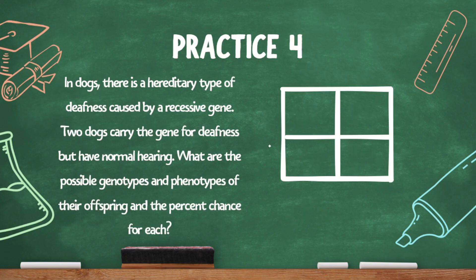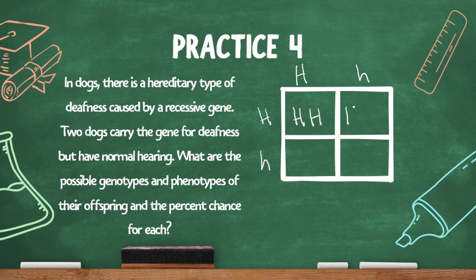Let's try another practice. In dogs, there's a hereditary type of deafness caused by a recessive gene. Two dogs carry the gene for deafness but have normal hearing. What are the possible genotypes and phenotypes of their offspring and the percent chance for each? Since the dogs carry the recessive gene for deafness but have normal hearing, that means they're both heterozygous. I'm going to use H. So each parent is big H, little h. Let's do the Punnett square: big H, big H; big H, little h; big H, little h; and little h, little h.